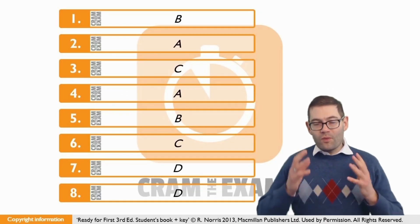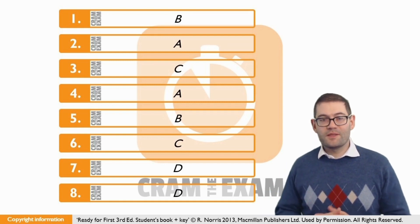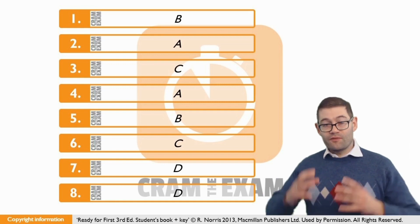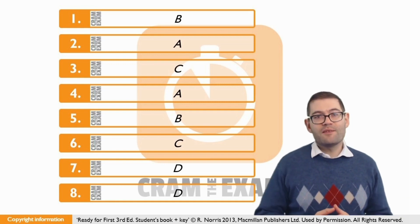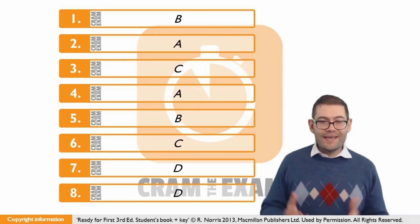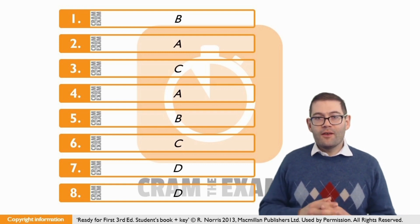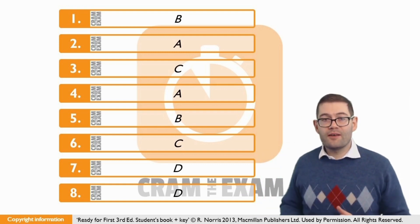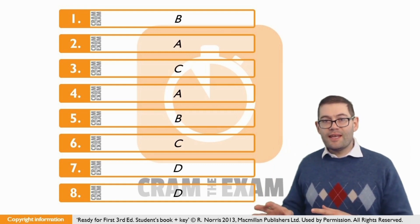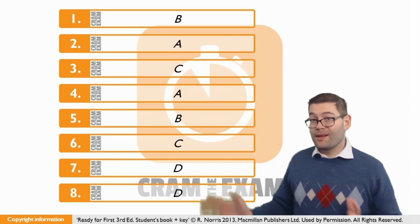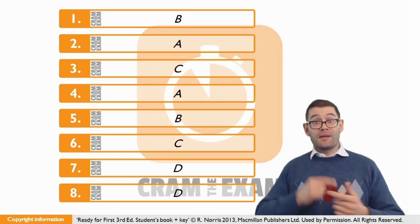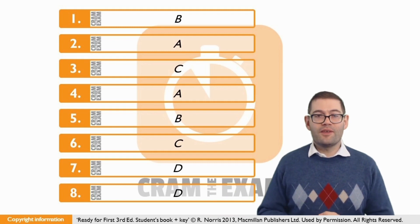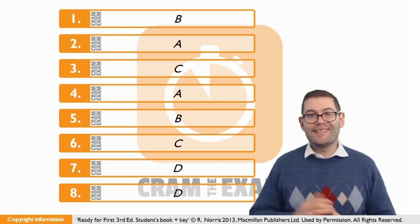For question number one, we've got to choose an answer which collocates with the preposition which follows the gap, which is up. We've also got to choose the correct verb to form the phrasal verb which means the same as establishing or creating a company. Well, if we have a look at that preposition, we can't use C because that doesn't collocate with up at all. If we have a look at D, bringing up, well that means something completely different. If we have a look at A, well that means completely the opposite of what we're actually trying to say. So the only answer that we can choose here is B, setting up.